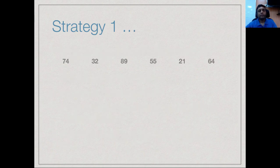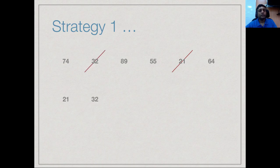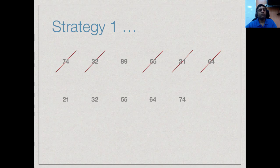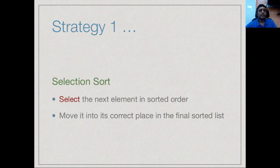This strategy can be illustrated with a list of six elements. In the first pass we look for the smallest value, which is 21, and move it to a new list. We repeat the scan — among the remaining values, 32 is the smallest, so we remove it and move it to the new list. We keep doing this: moving 55, then 64, then 74, then 89. In this process, 21 would be at the bottom and 89 at the top, giving the list sorted in descending order. This strategy is called selection sort — we select in each round the smallest element and move it to its correct position in the sorted list.